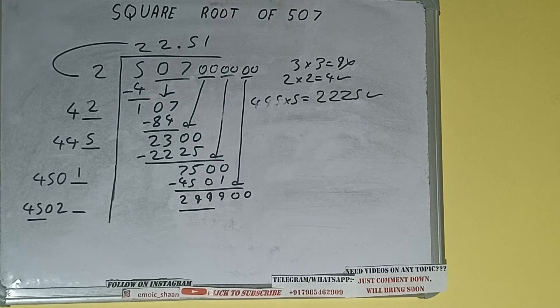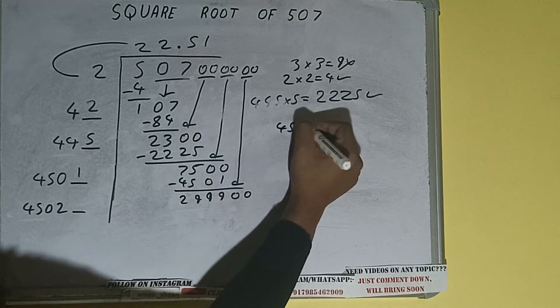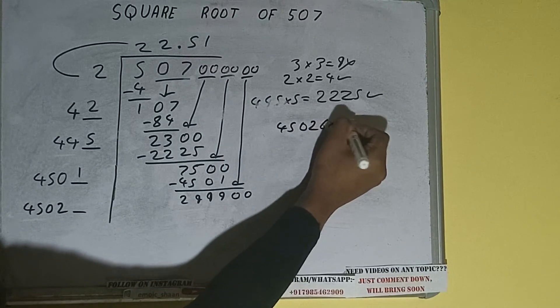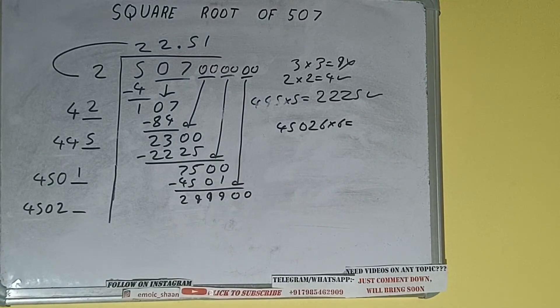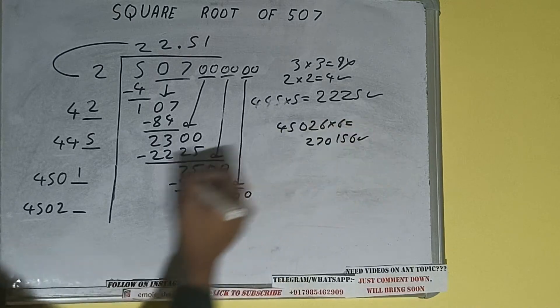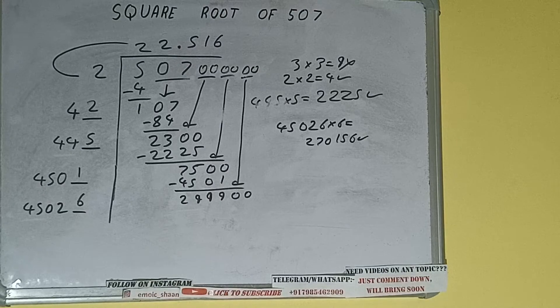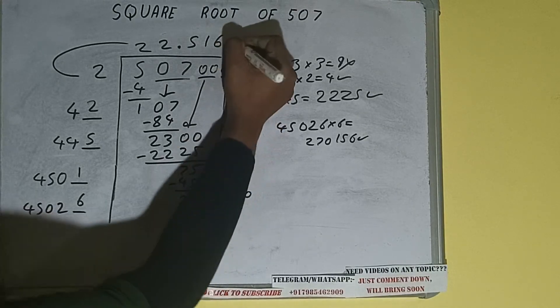So 45026 times 6 we can try, and we'll be having 270,156, which is good to take. So 6 here and 6 here. But we don't need to calculate because we got the answer correct up to 3 decimal places.